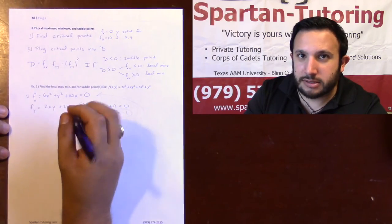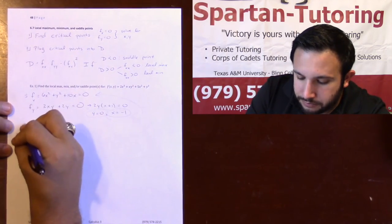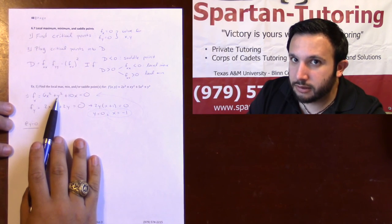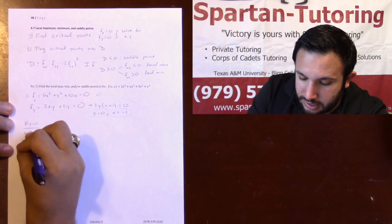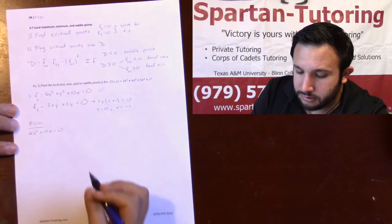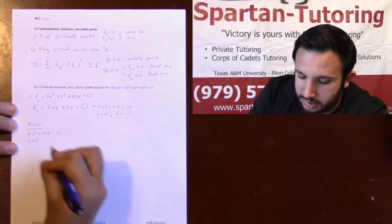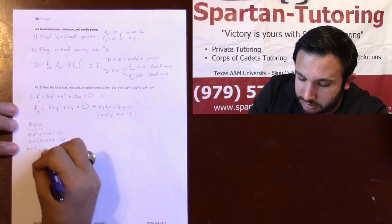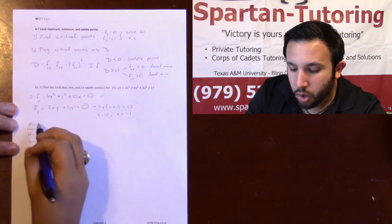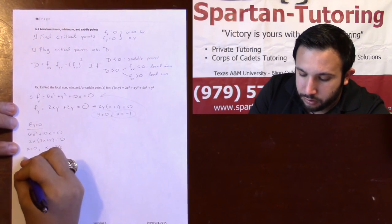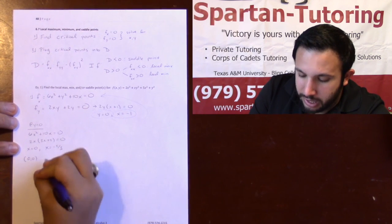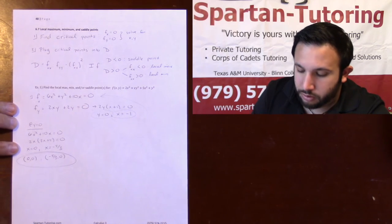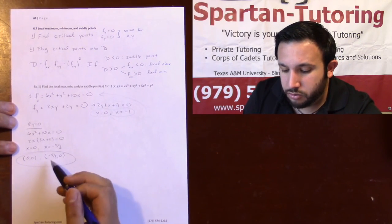First, check at y equals zero: plug zero into fx and solve for x. You get 6x squared plus 10x equals zero. Factoring out 2x gives 2x(3x plus 5) equals zero, so x equals zero and x equals negative five-thirds. When y equals zero we have two critical points: (0, 0) and (−5/3, 0).